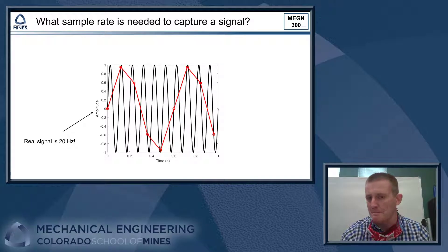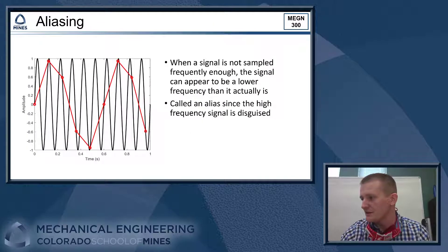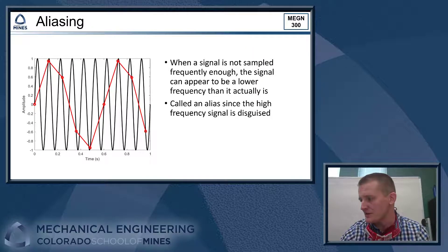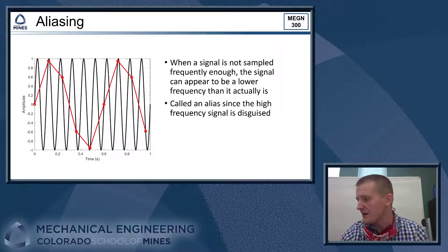So what's going on here is a phenomenon called aliasing. So what's happening is we're sampling a signal, but we're not sampling at a fast enough sample rate to accurately determine what the frequency of the real signal is.